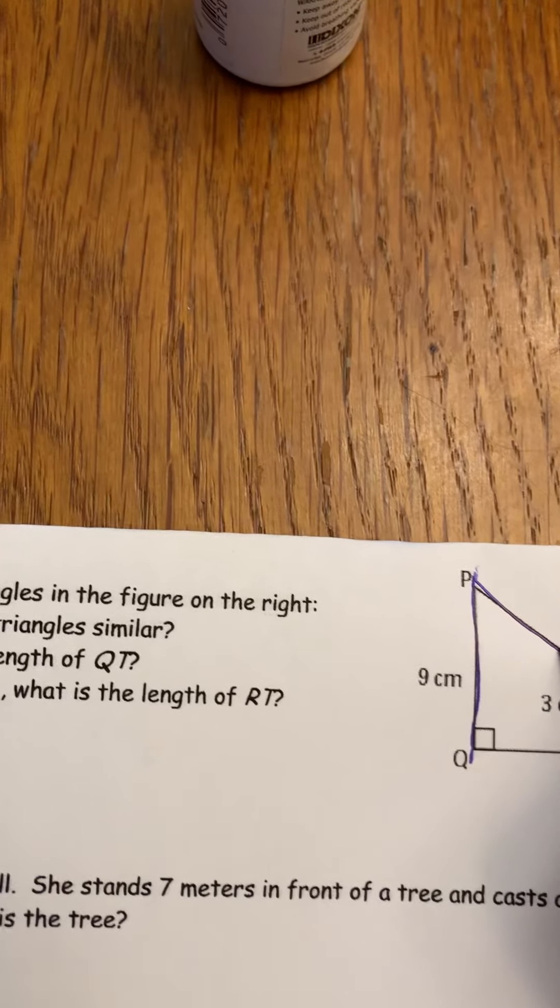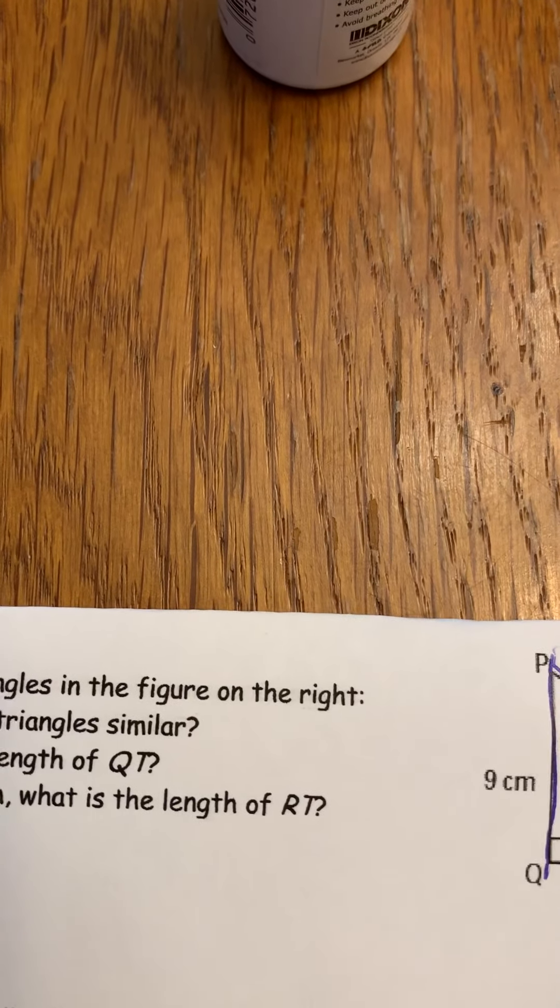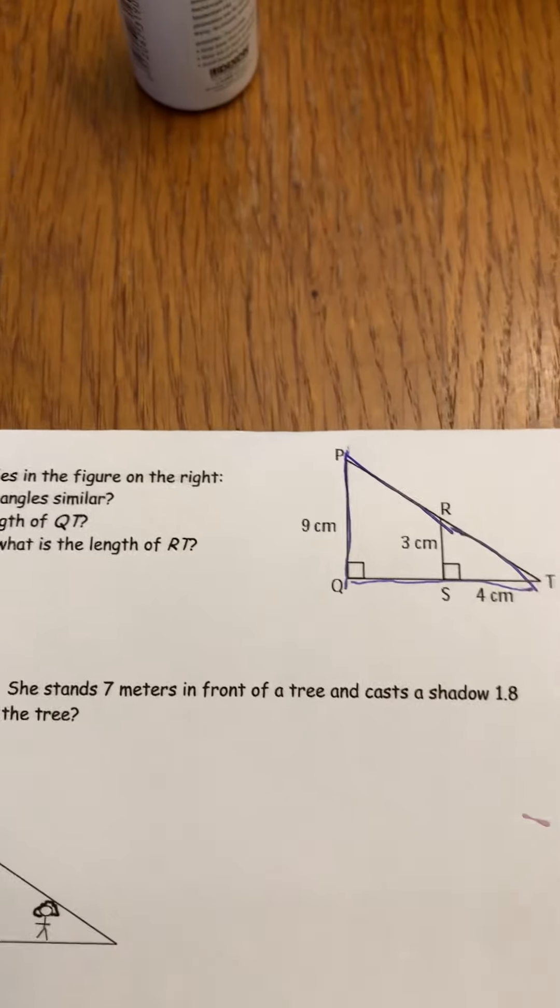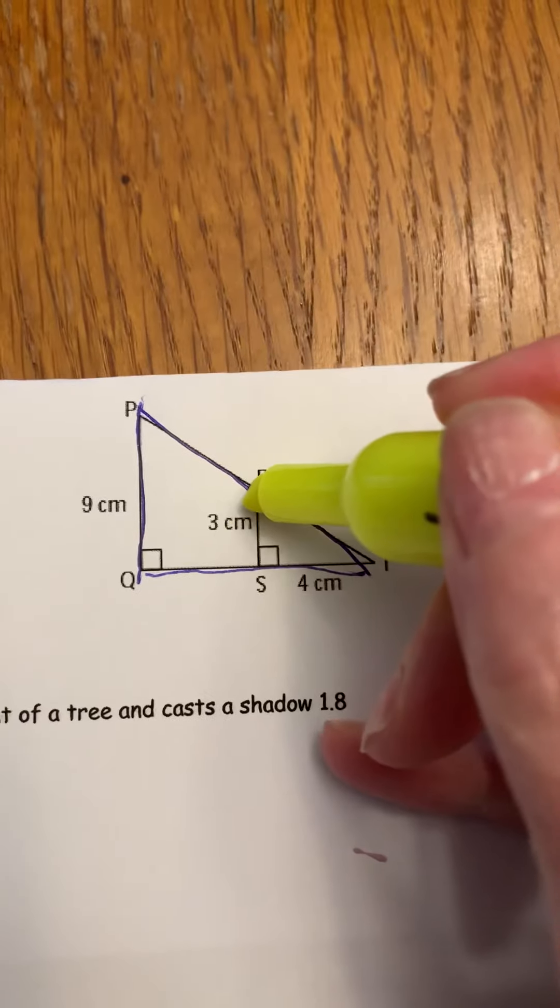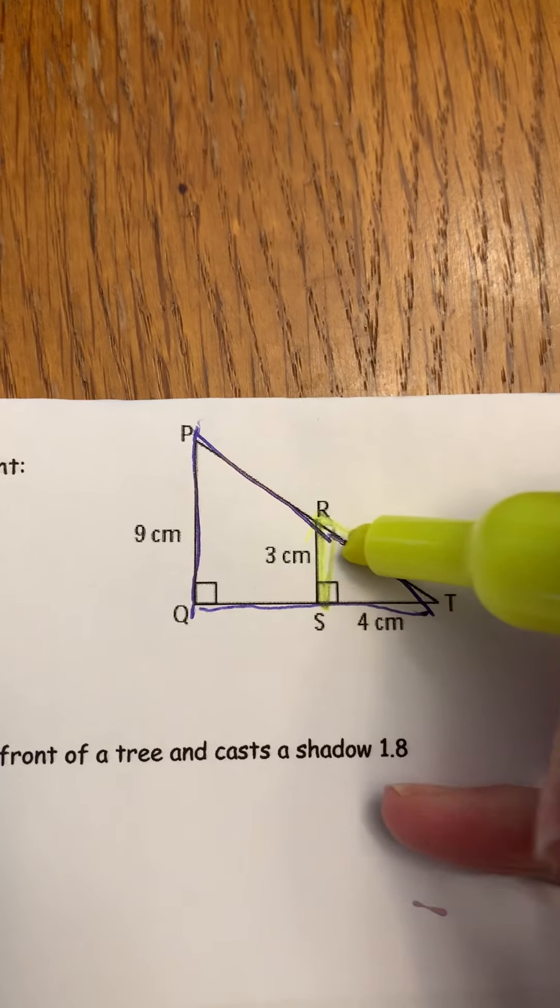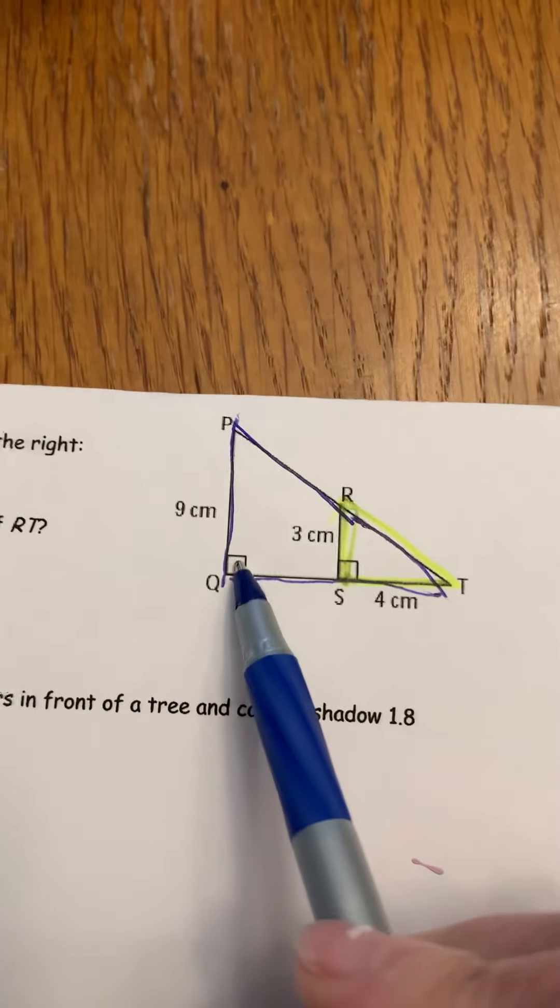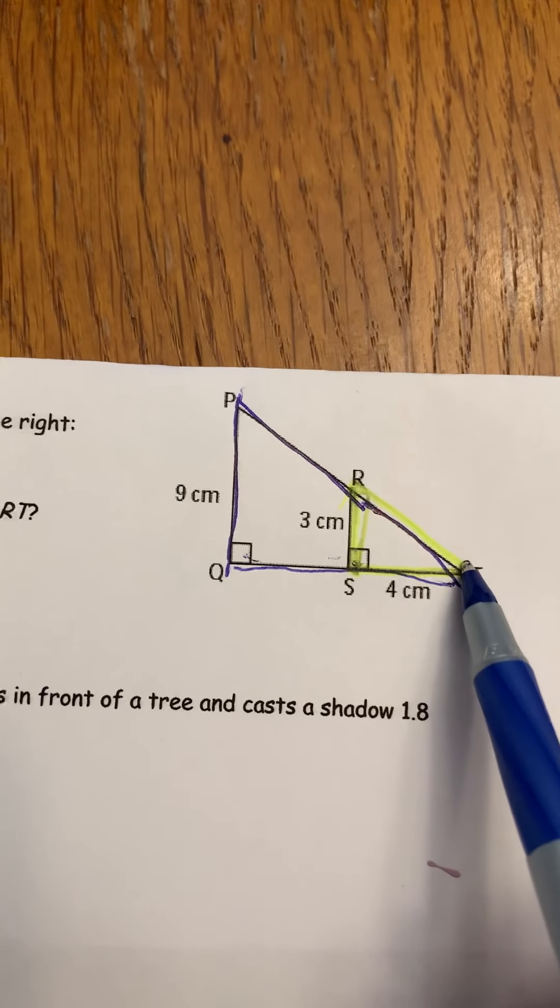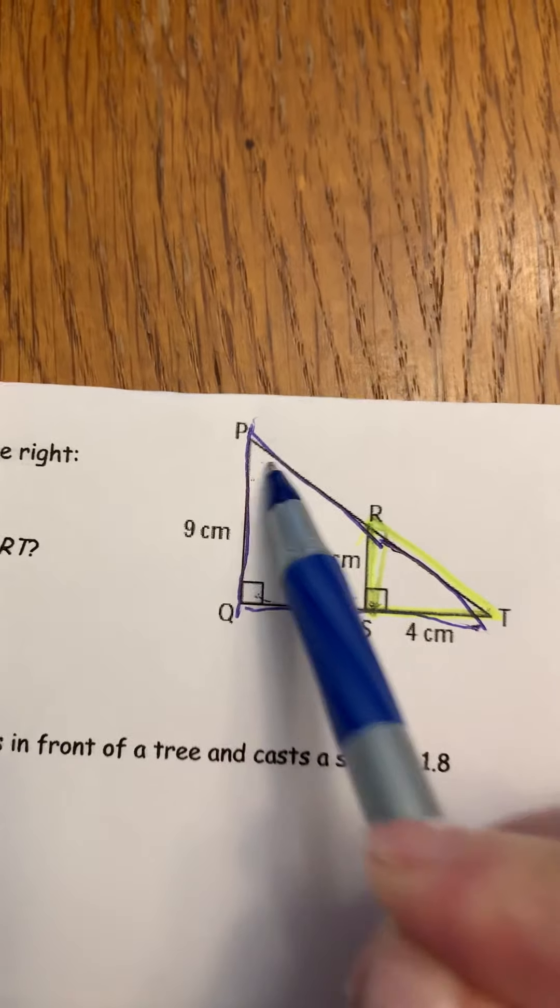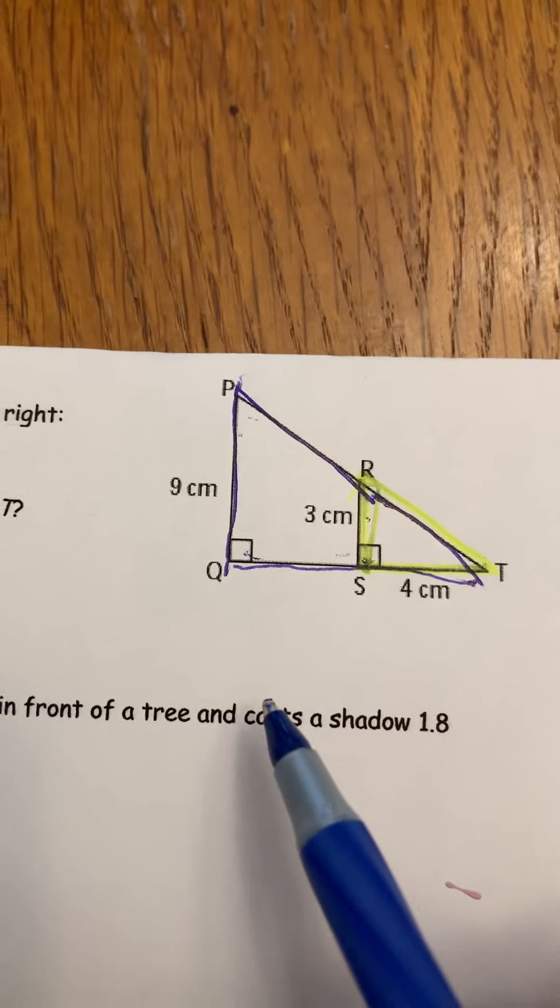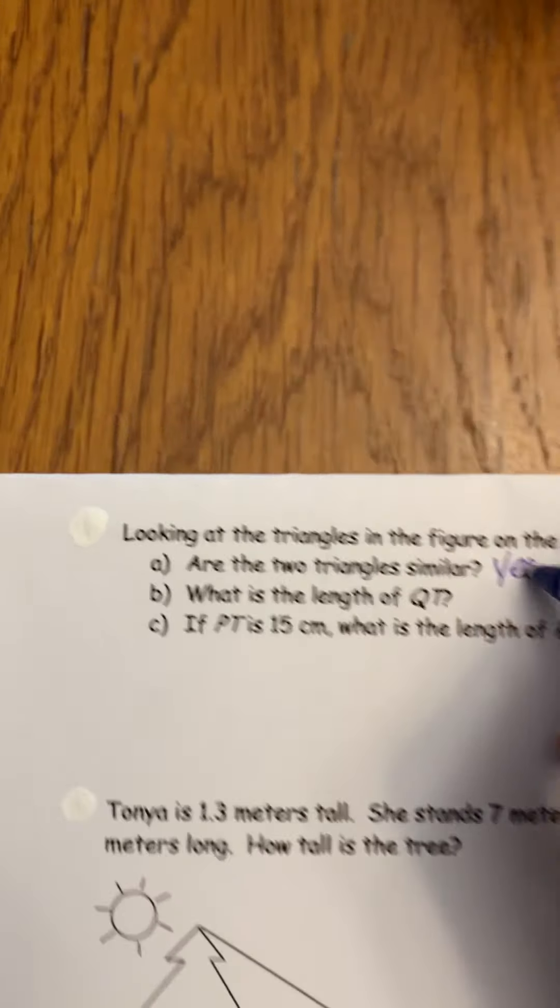There's one giant triangle like this, triangle PQT, but then there's another triangle, a little baby triangle I call this one, RST. And you can see that they first of all both have 90 degree angles, and they also both shared this angle, which by default means this angle and this angle have to be exactly the same, which makes them similar triangles.